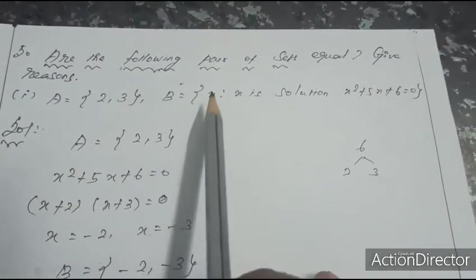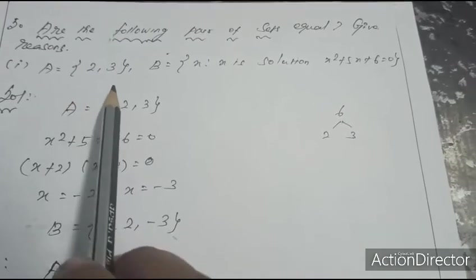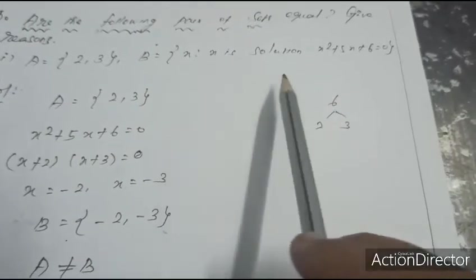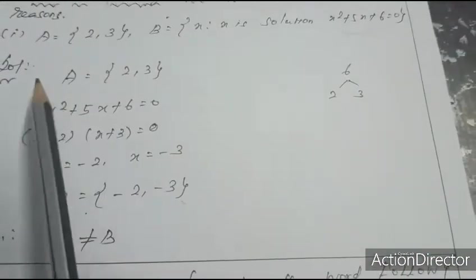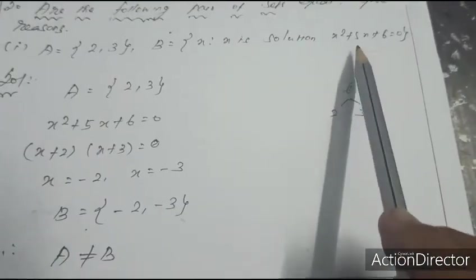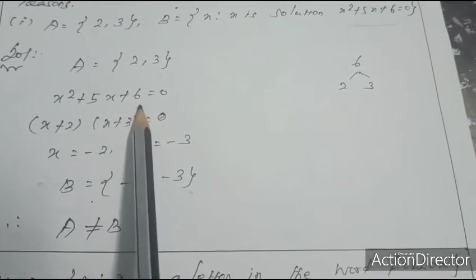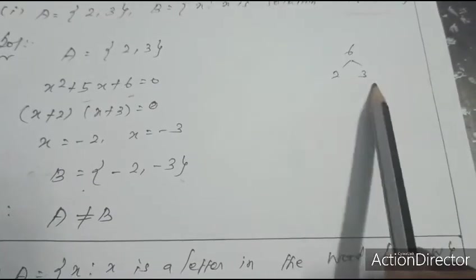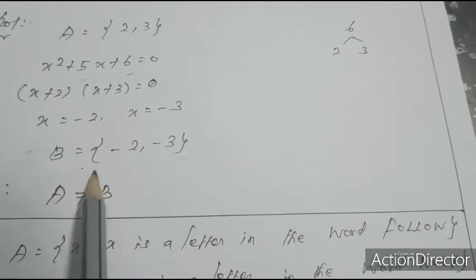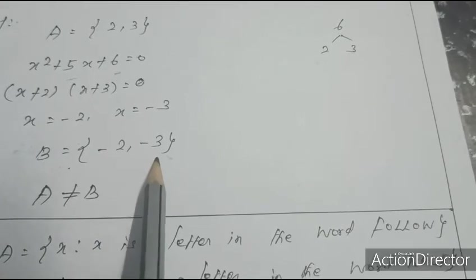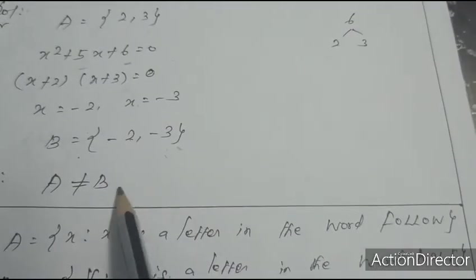Fifth question: are the following pairs of sets equal? First: A = {2, 3} and B = {x : x² + 5x + 6 = 0}. Solving the quadratic equation: multiplying roots gives 6, adding roots gives 5, so factors are (x+2)(x+3) = 0, giving x = -2 and x = -3. Therefore B = {-2, -3}. Since 2 ≠ -2 and 3 ≠ -3, A ≠ B.